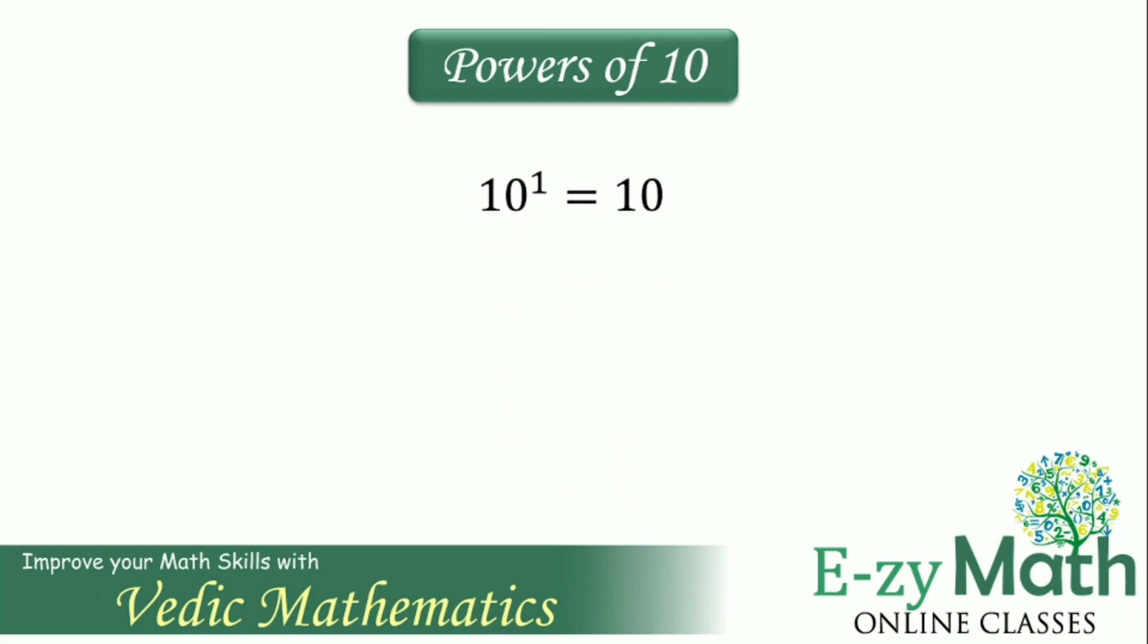10 to the power 1 equals 10. 10 to the power 2 is equal to 10 into 10, that gives us 100. 10 power 3 is 1000 and 10 power 4 is equal to 10,000.